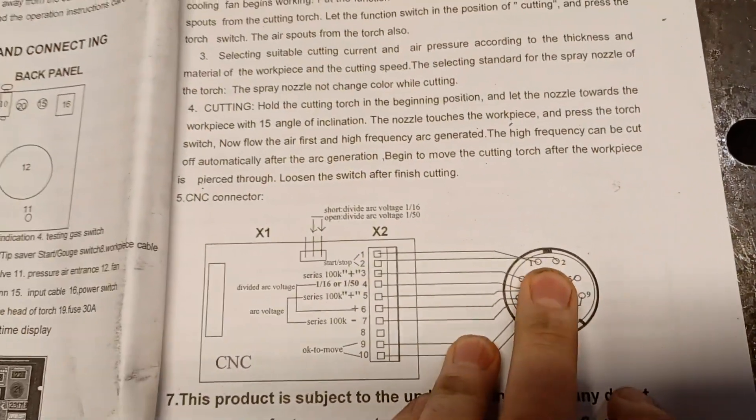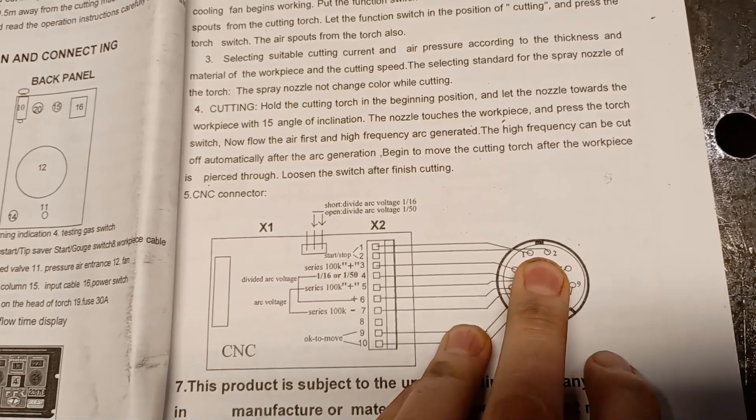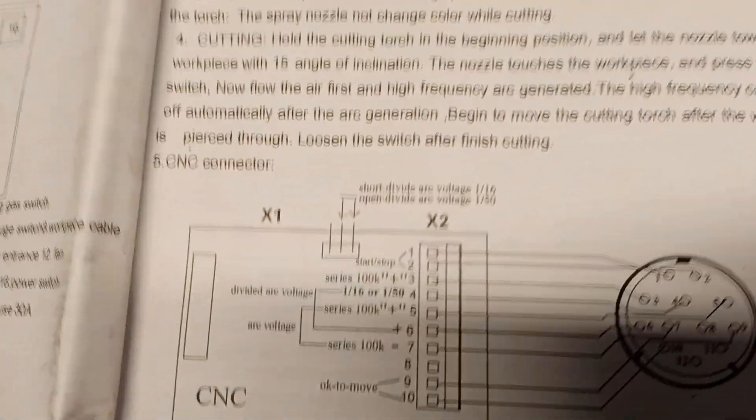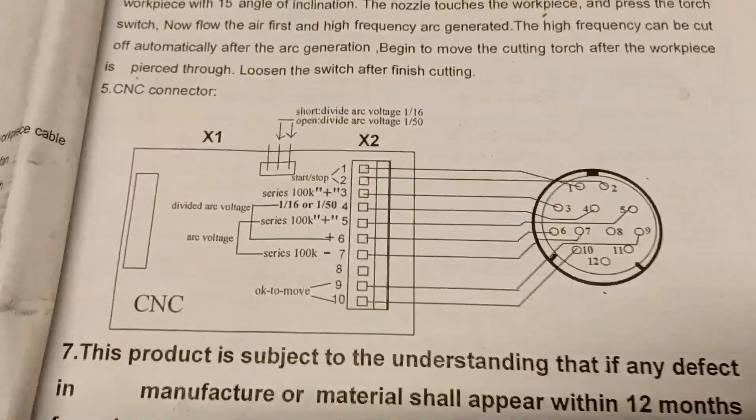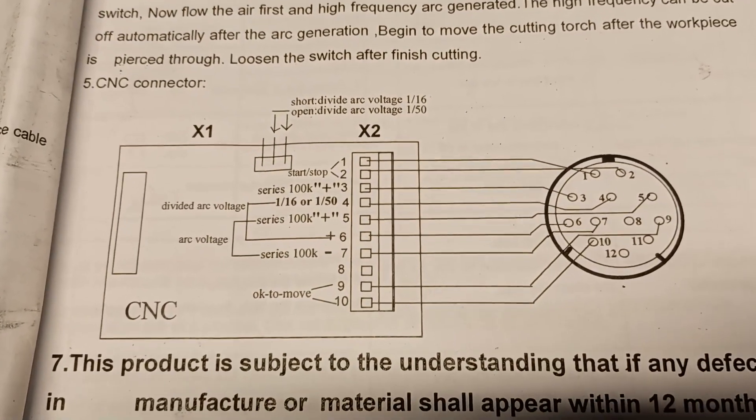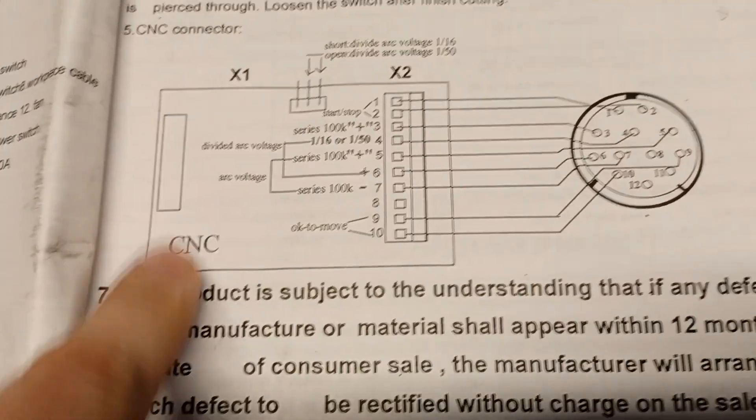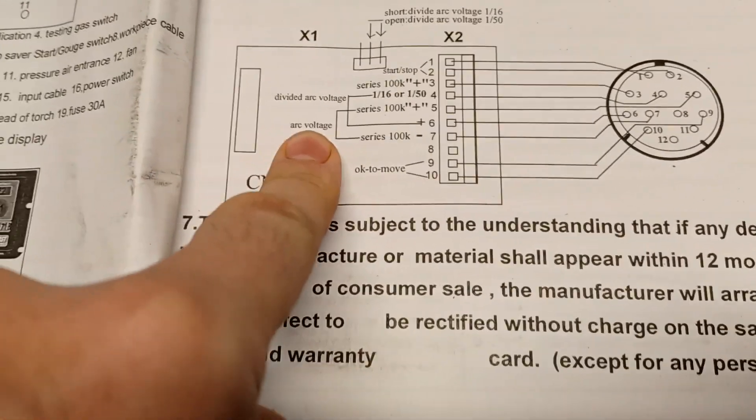So I hooked the trigger up to pins 1 and 2, and then you can see here, hopefully if I stop shaking, pins 5 and 7 is the raw arc voltage.